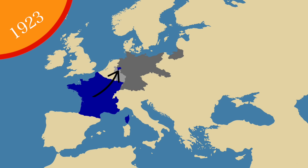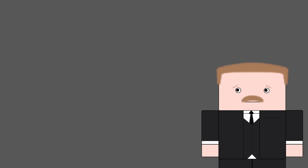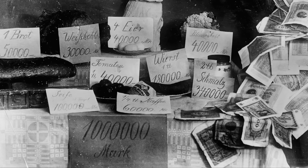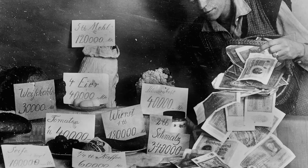German reparations could be paid in raw materials, many of which were produced in the Ruhr. Another way reparations could be paid was in foreign currencies, which were funded by printing more paper marks. This created the hyperinflation that the Weimar Republic is famous for. For example, in January 1923 a loaf of bread cost 163 marks, and in early November 1923 the same loaf of bread cost over 75 billion marks.